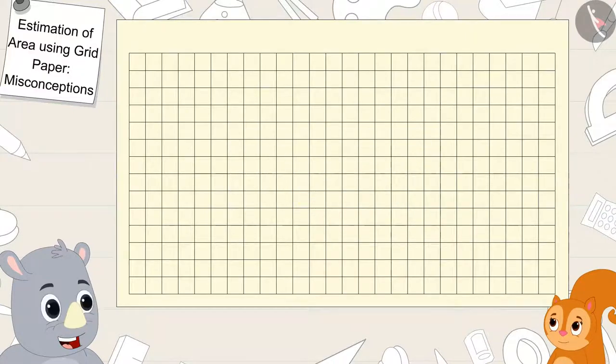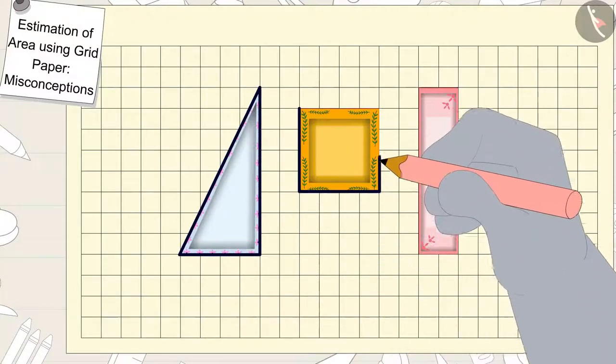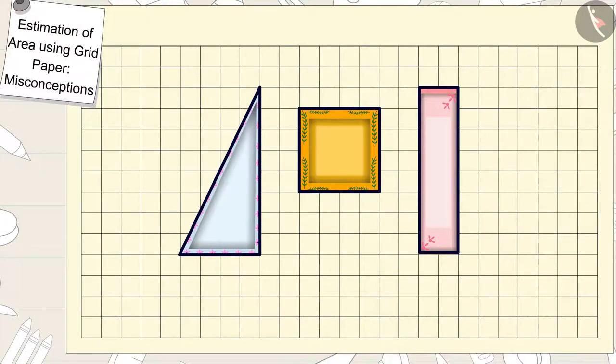After saying this, Gaggoo used a pencil to trace the outlines of the three plates onto the grid paper.